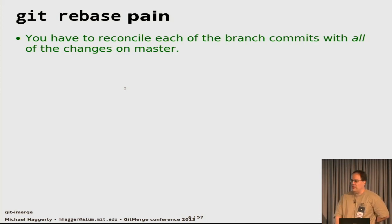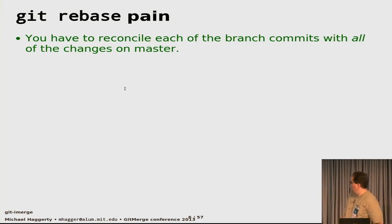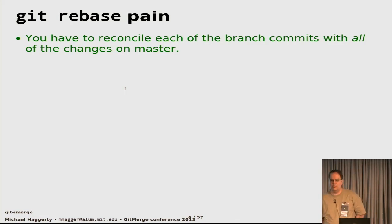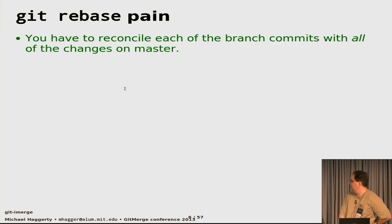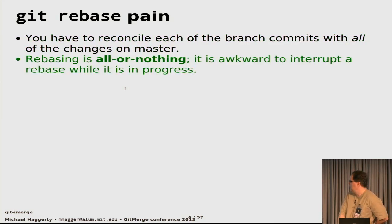With git-rebase, on the other hand, it's a little better in some ways and worse in others. For git-rebase, you have to resolve each of your branch commits with all of the commits made on master — which is better than git-merge where you bring all changes together at once. Rebase breaks it up a little bit, which is usually easier. But rebasing is also all or nothing — once you're in the middle of a rebase, you can't use the repository for anything else.